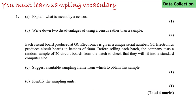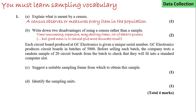Explain what is meant by census. A census is when you observe or measure every item in the population. This may be time consuming and expensive. If it involves a destruction test it will destroy items, and there could be a lot of data to process. The good news however is it should give a highly accurate result.